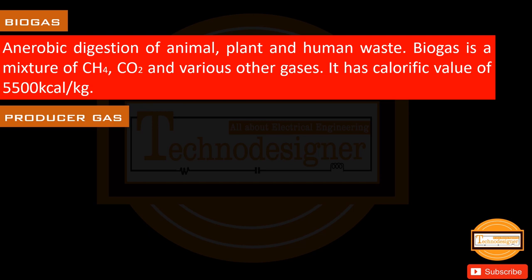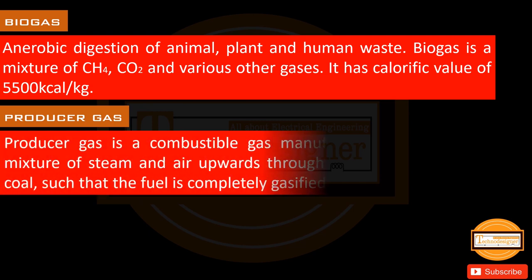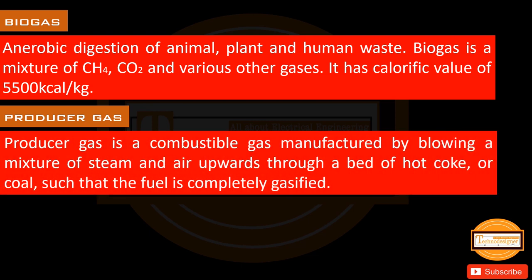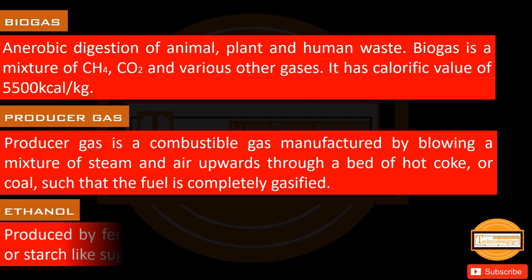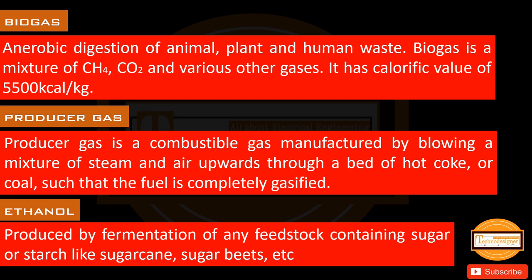Producer Gas is a combustible gas manufactured by blowing a mixture of steam and air upwards through a bed of hot coke or coal, such that the fuel is completely gasified. Ethanol is produced by fermentation of any feedstock containing sugar or starch, like sugarcane, sugar beets, etc.